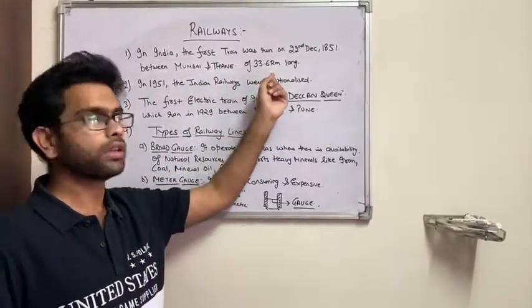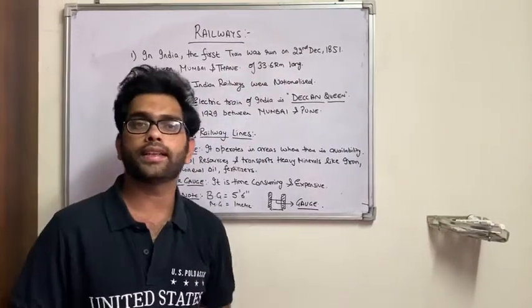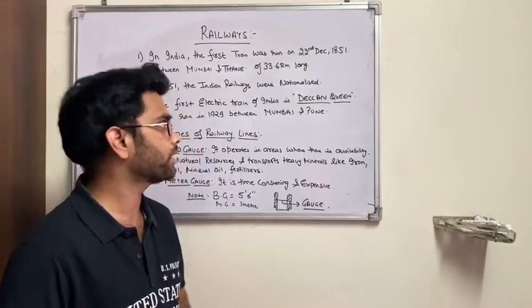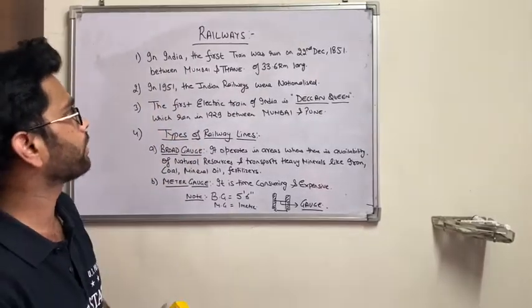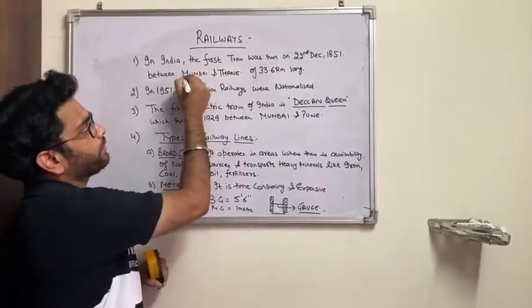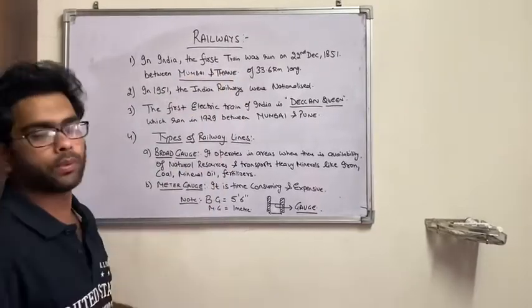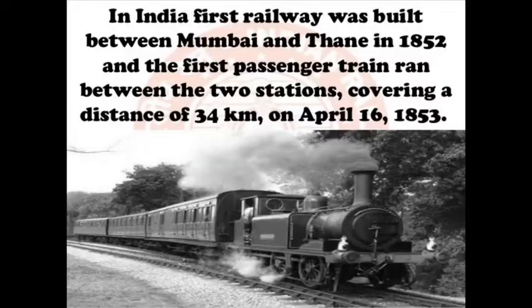And it was for a short distance that was only 33.6 kilometers long. So the first point is important - the first train ran between Mumbai and Thane during the British era. This is one of the important points about the railways.